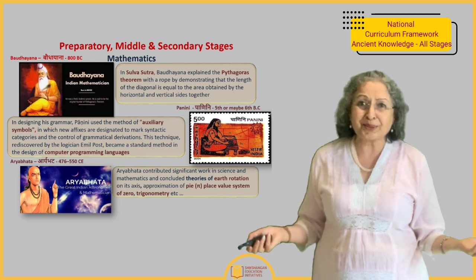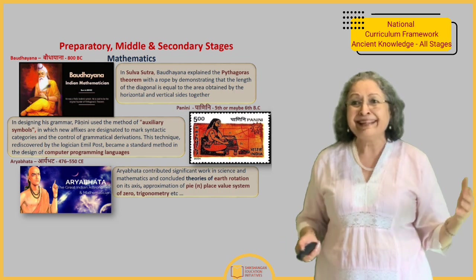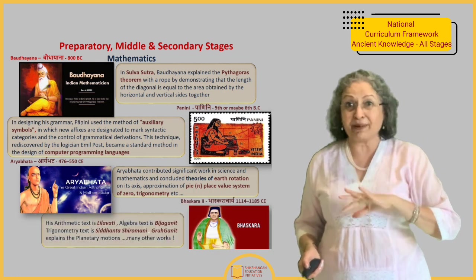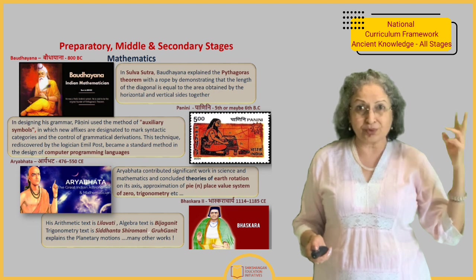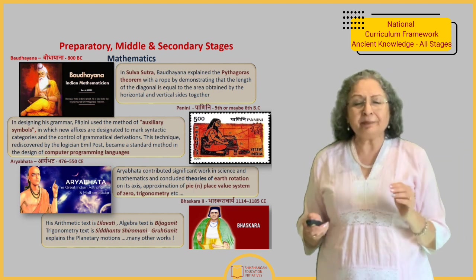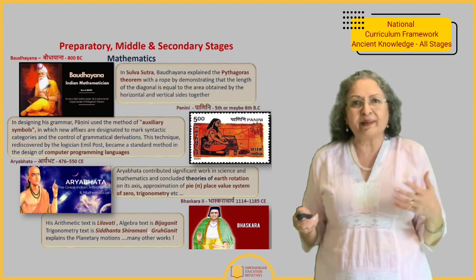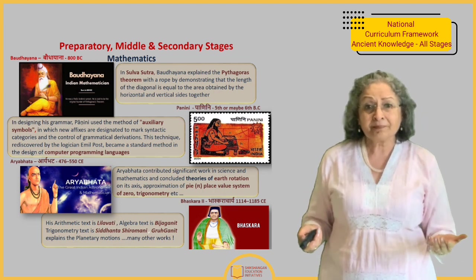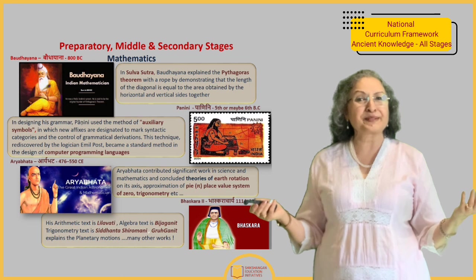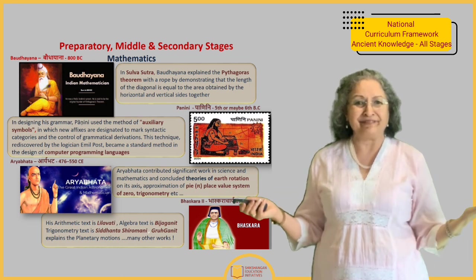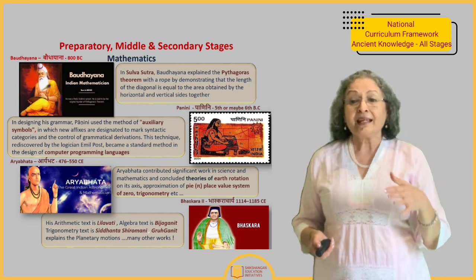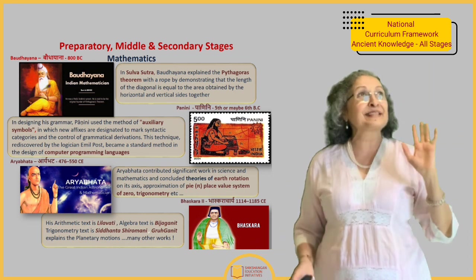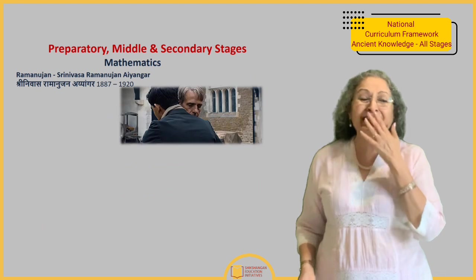Aryabhatta — we have heard a lot about him and know he gave zero to India, but there are many other things he actually did, including calculating the earth's rotation, revolution, zero, and trigonometry. The NCF also mentions Bhaskara 2 — not Bhaskara 1. His arithmetic treatise is called Leelavati, his algebra text is called Bijaganit, his trigonometry work is Siddhanta Shiromani, and Grahaganit is about the rotation and revolution of planets. What a marvellous document this is — I wish we had been told all this when we were children in school.